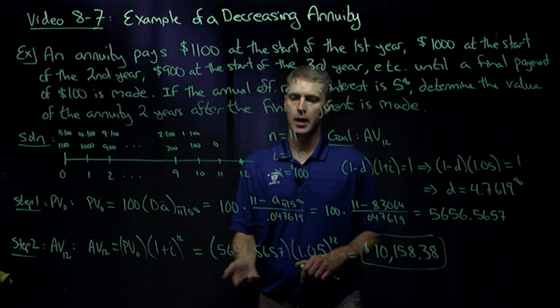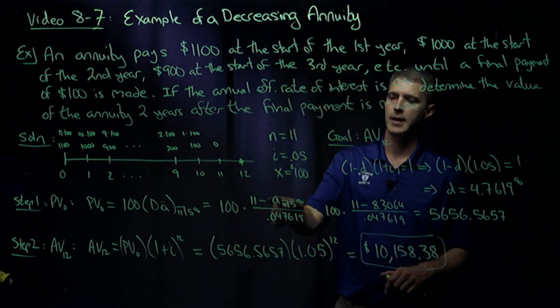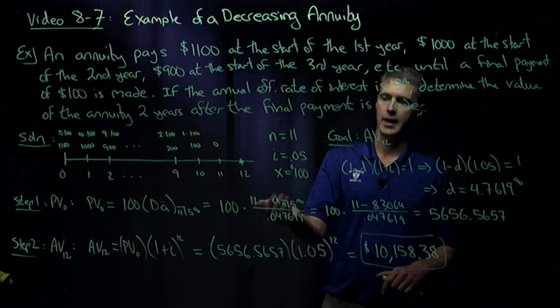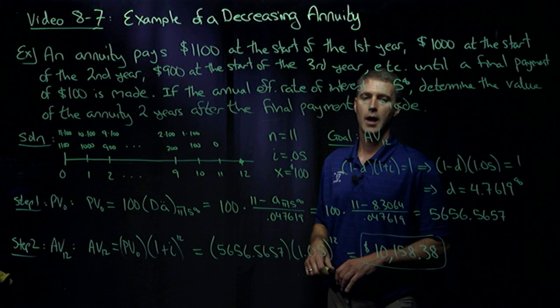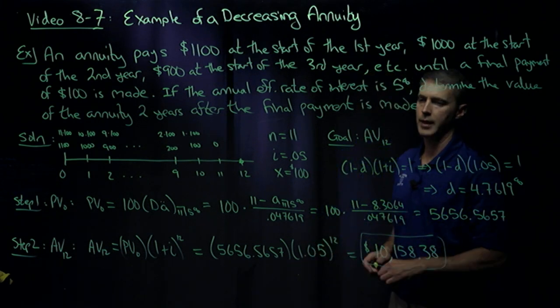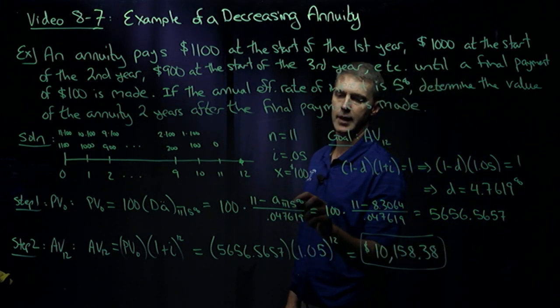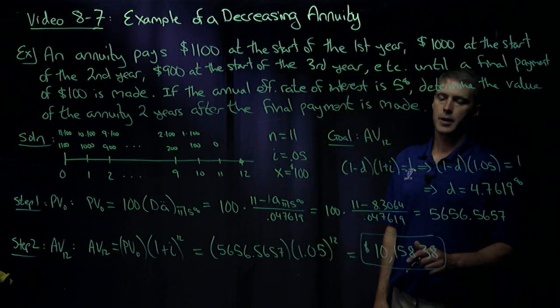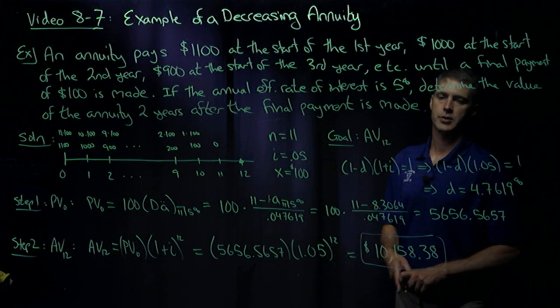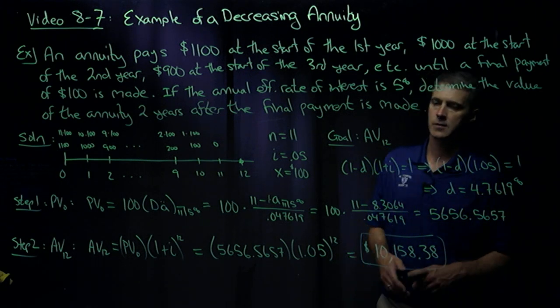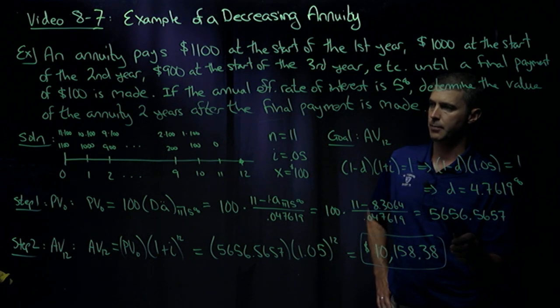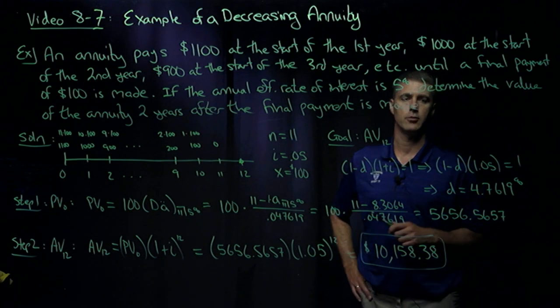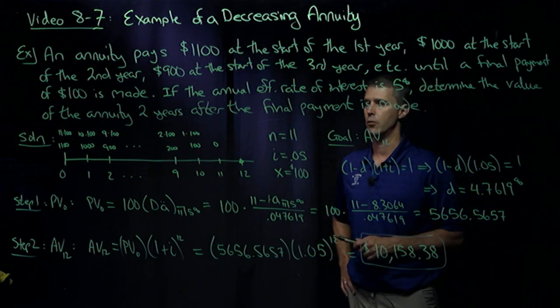So there's the notation. Here's the formula, N minus A N angle 5 over D. So 11s, 5s, and discount rates there. If I punch up the numbers on my calculator, remembering that A 11 angle 5 assumes a $1 payment per period, I would get the number 8.3064 for that annuity immediate's present value. And so when I punch it up, I get 5656.56 repeating, essentially, for the present value of this cash flow. I chopped it at the fourth decimal.